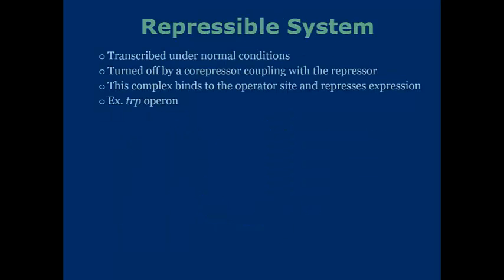The next type of system we'll go into is the repressible system. This is transcribed under normal conditions. However, it's turned off by a co-repressor that's coupled with a repressor. This is going to bind to the operator site and repress expression. So, the inducible system is not transcribed under normal conditions but can be induced to transcribe, whereas the repressible system is transcribed but can be set to repress if the conditions match.